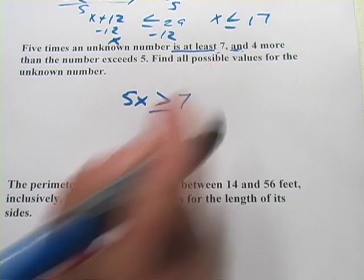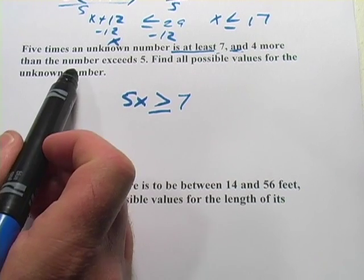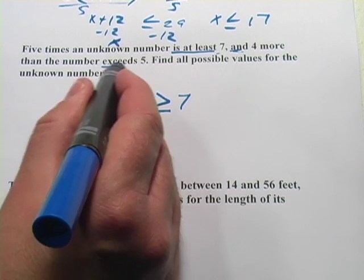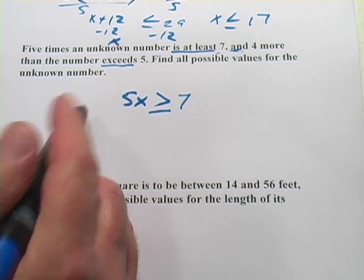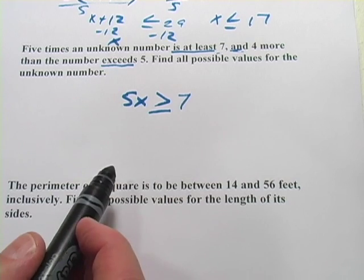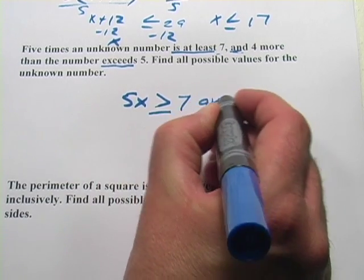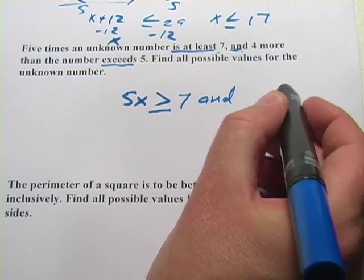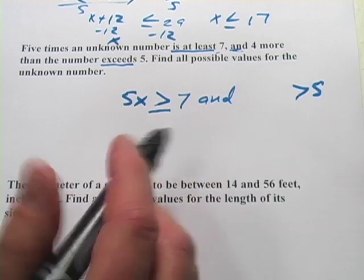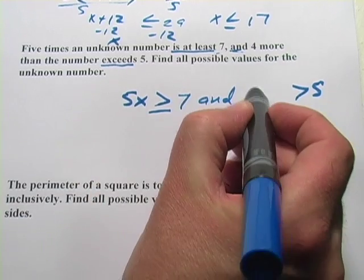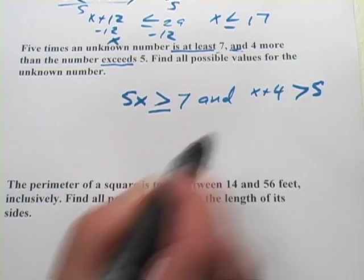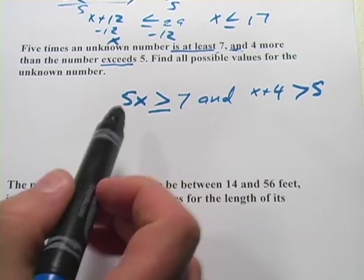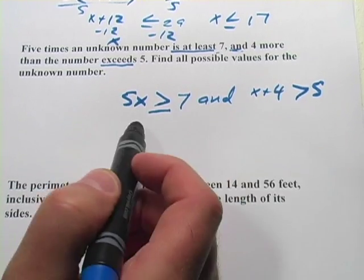Now we've got another part. We've got an and here. And four more than the number exceeds five. That's our inequality there. There's no is, but this is definitely the inequality. So let's write the second part of this. And exceeds five means it's greater than five. And four more than the number. Well, that's the number plus four. That would be four more than that number. So now we've got our two inequalities.